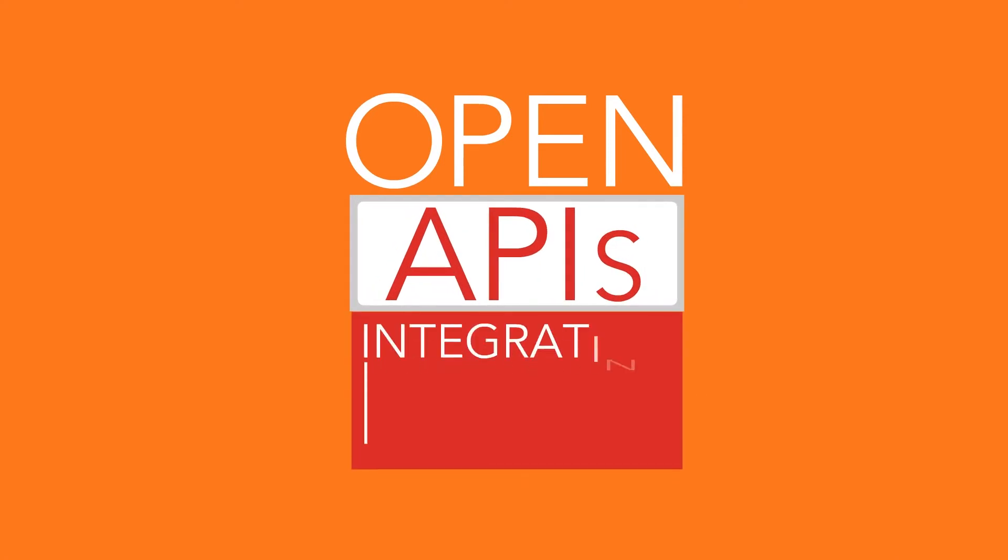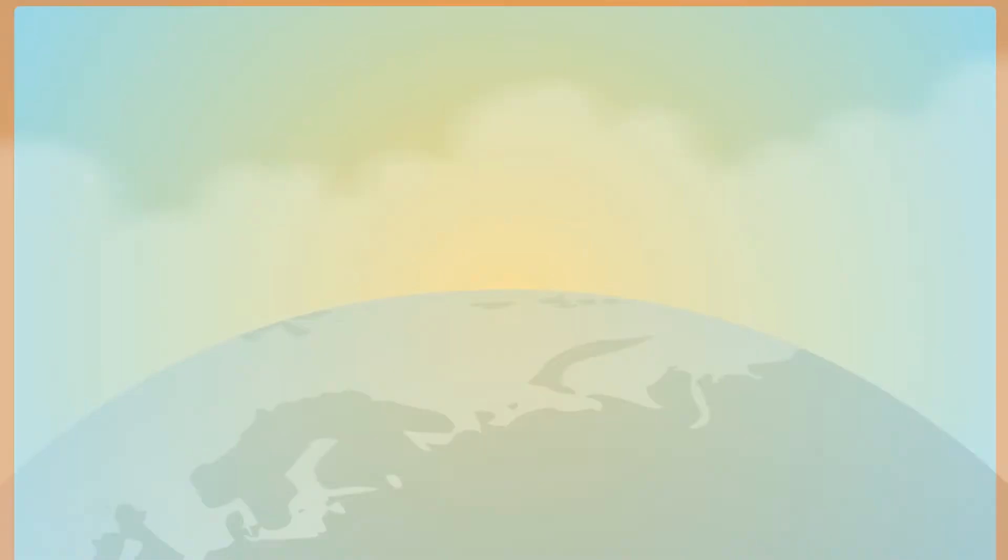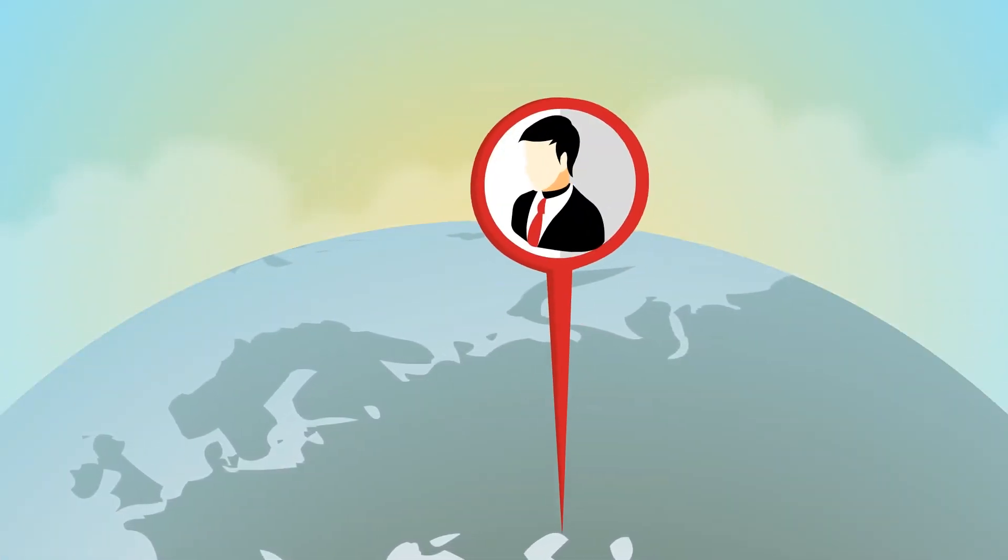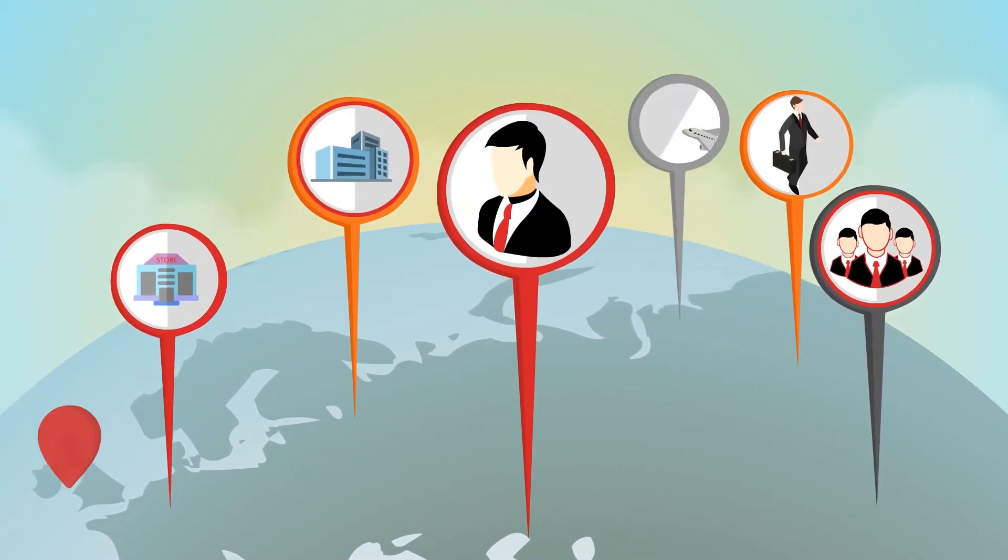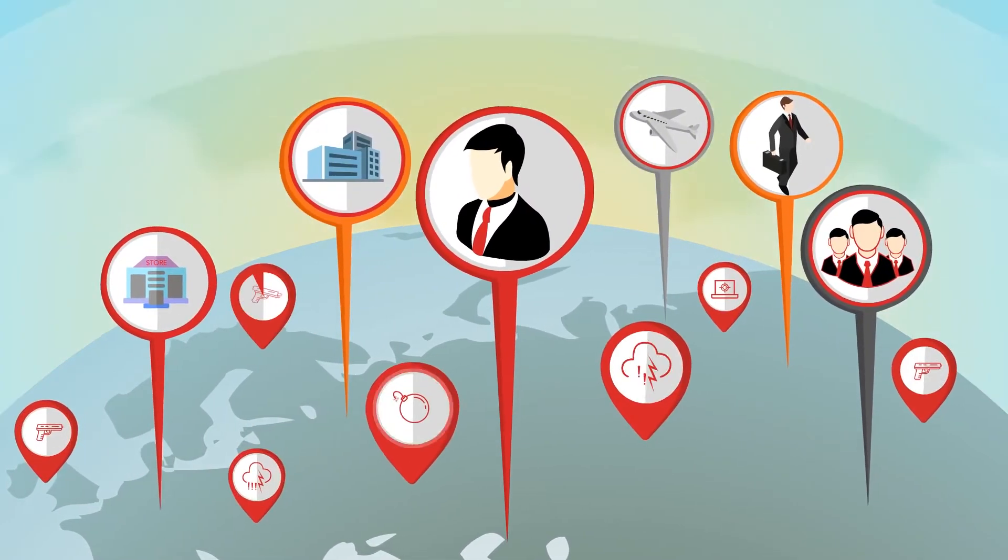The system has open APIs for integrating new sources of data. You can overlay these incidents with where your people, assets, partners, and supply chain routes are so you can visually see the potential impact.